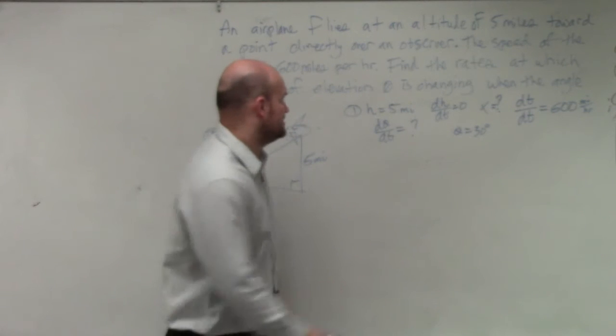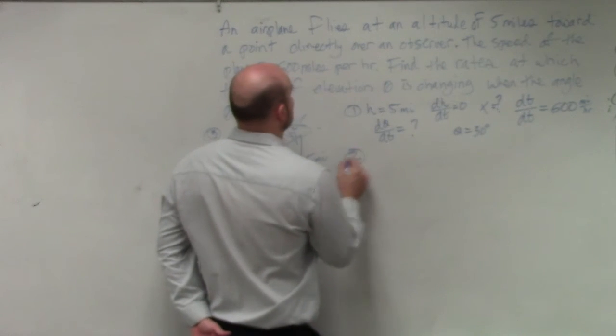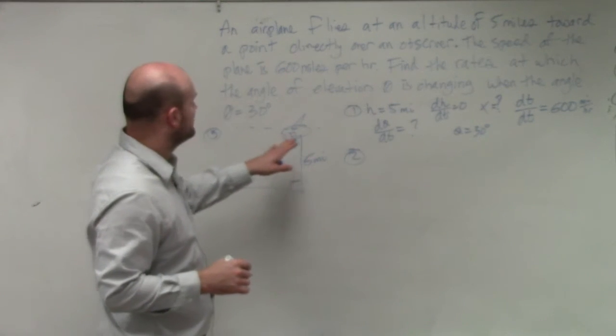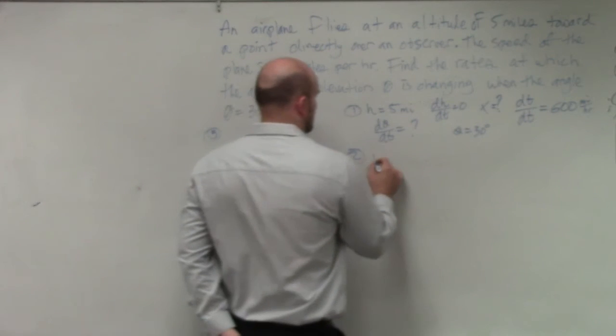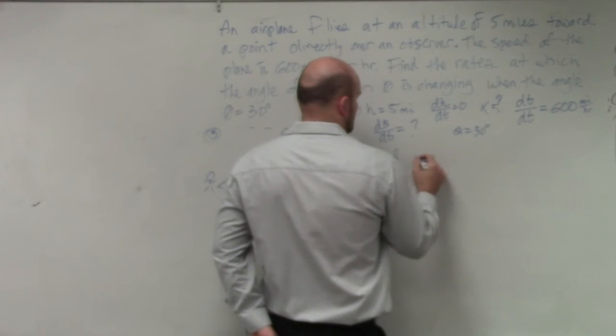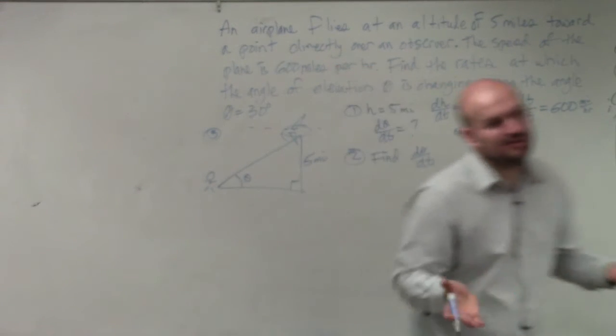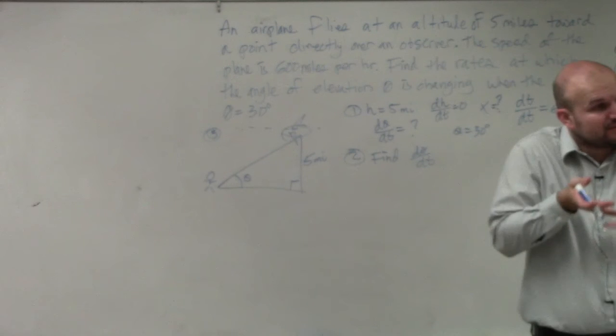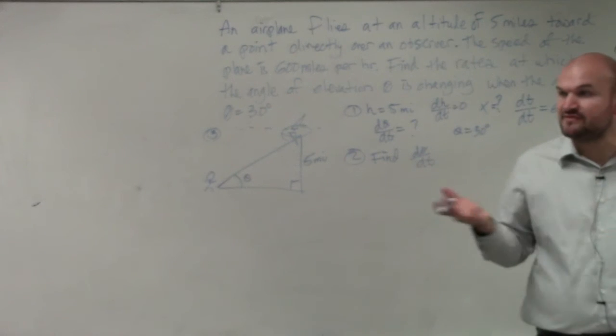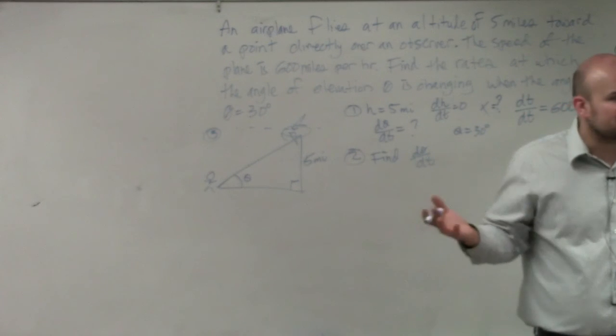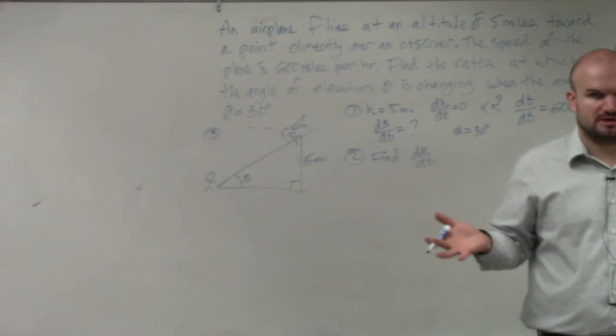So we're basically looking at, they're asking us to identify d(theta)/dt. We know that when theta equals 30 degrees, we're looking for that amount. So basically, step two, restate the question, find the rate at which the angle of elevation is changing. So therefore, when I know that I need to find d(theta)/dt, I know that I need to find the rate and change of theta. So my equation obviously has to include a theta. Would everybody agree with that?